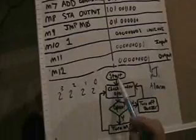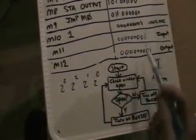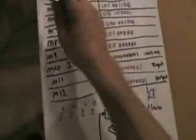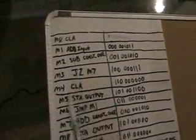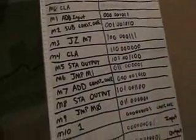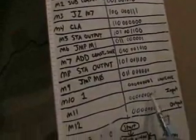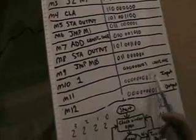We have a flowchart here. From the start, the first thing we do is check if the window is open, which corresponds to bit one on input. In our pseudocode, memory address zero clears the accumulator. Next, we add the value stored at memory address 11, which reflects whether the window is open or closed. When the window is open, bit one is one, so we add a one to the accumulator. We then subtract one from the accumulator. If the window is open, we end up with zero in the accumulator. If the window is closed, we end up with minus one.